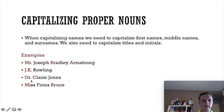Other examples: Dr. Claire Jones — capital D for Doctor, capital C for Claire, capital J for Jones. Miss Fiona Bruce — capital M, capital F, capital B. So titles like Dr., Mr., and Miss always get capitalized when used with a person's name.